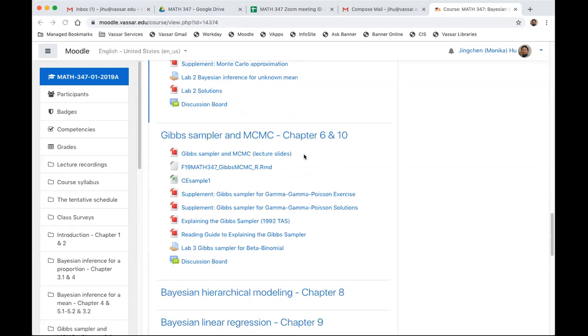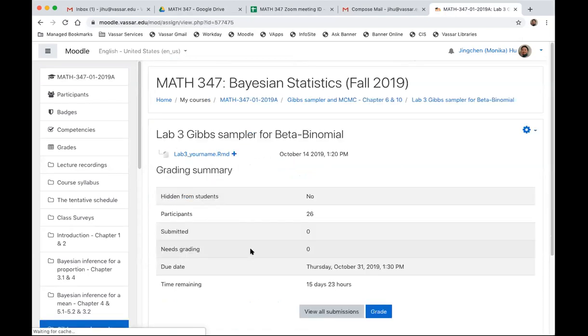Right, so it's chapter 6 and 10 on this unit that we're doing. If you go to Lab 3, you will see that we put the Lab 3 RMD file on Moodle, so download that. The instructions you will see in Lab 3 - we had in the paper, except we walked you through step-by-step with the beta binomial example that they did.